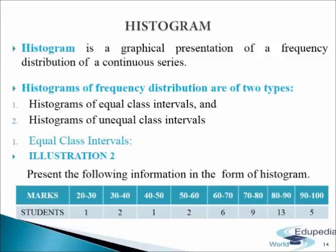Next we come to histogram. Histogram is a graphical presentation of a frequency distribution of a continuous series. While constructing a histogram, values of the variable are shown on the x-axis and their frequencies on the y-axis. Frequencies corresponding to different class intervals are shown by rectangles. The width of the rectangles is according to the width of the corresponding class intervals, and the height of the rectangles is in proportion to the frequencies of the class intervals. Different rectangles meet each other from left to right. If the data are in the form of an inclusive series, these are first converted into exclusive series. It may be noted that histograms are different from bar diagrams because these are two-dimensional diagrams.